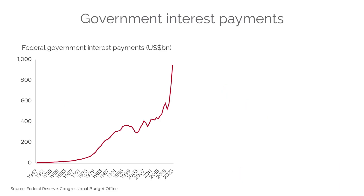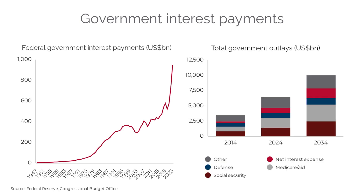Interest payments skyrocketed. The U.S. is now spending a trillion dollars per year on interest payments alone. To put this into context, this is the first time that the U.S. is spending more on interest payments — not on paying off the principal, but just the interest — than they are spending on their entire defense budget. This is another red flag.